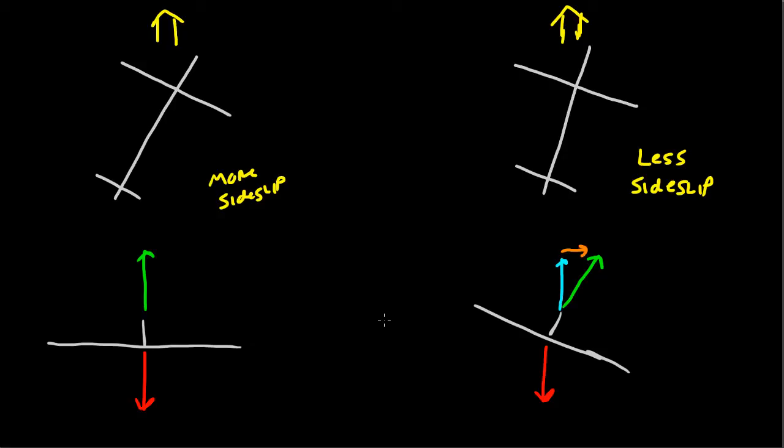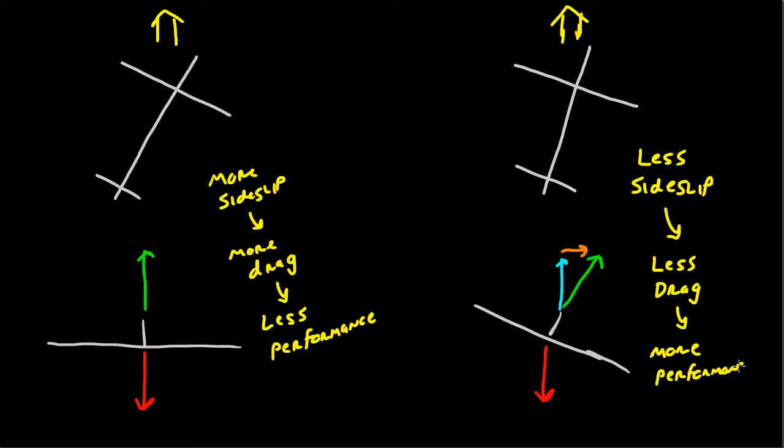As we know from doing landings, a slip is an extremely high drag configuration. So more sideslip, therefore more drag. Less sideslip over here, less drag. And if you have more drag, you're going to have less performance, whereas over here less drag equals more performance.